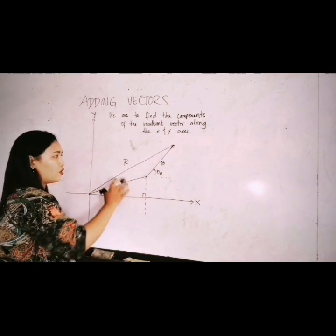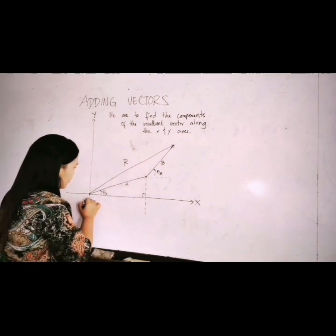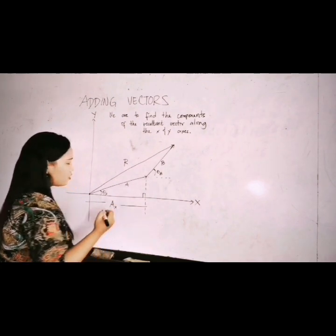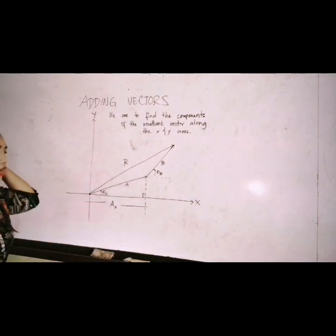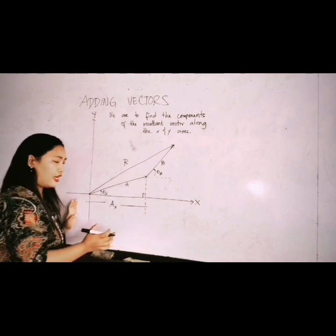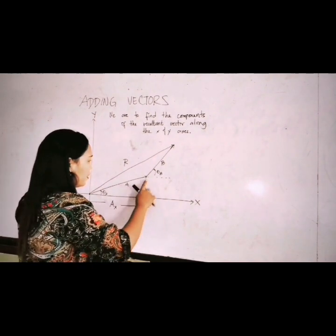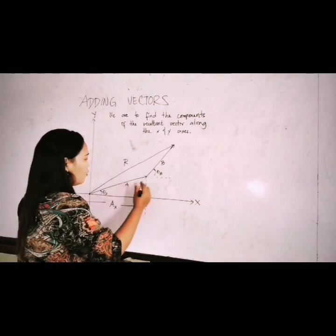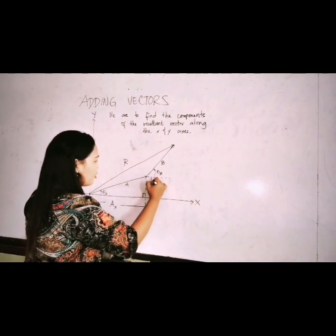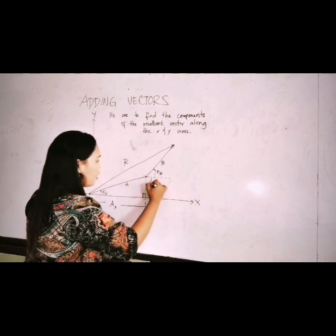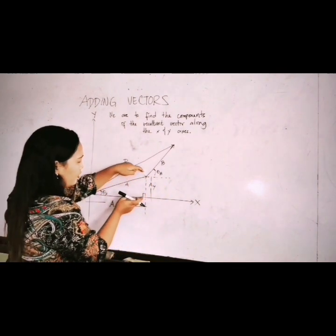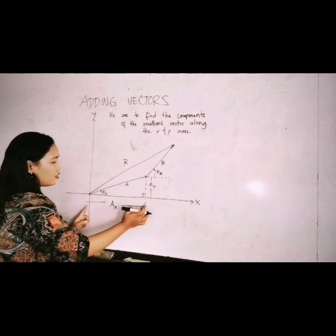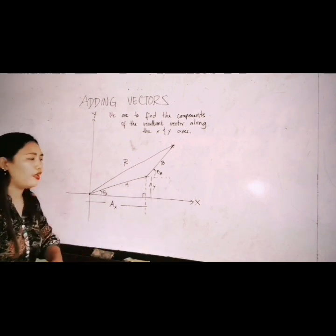We can say that this is our A sub x, or the component of vector a along the x axis. We can say this one is our A sub y. This side is the vertical component of the vector a and this side is the horizontal component of vector a.